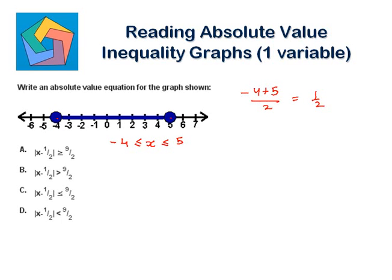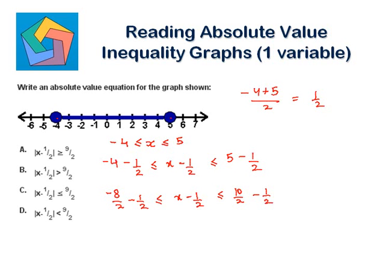So we subtract 1 by 2 from all sides: negative 4 minus 1/2 is less than or equal to x minus 1/2, less than or equal to 5 minus 1/2. This simplifies to negative 9/2 is less than or equal to x minus 1/2, less than or equal to 9/2. This implies absolute of x minus 1/2 is less than or equal to 9/2, which is the answer in part c.